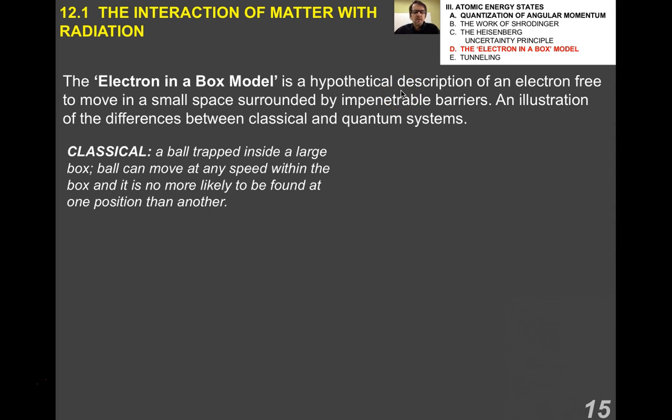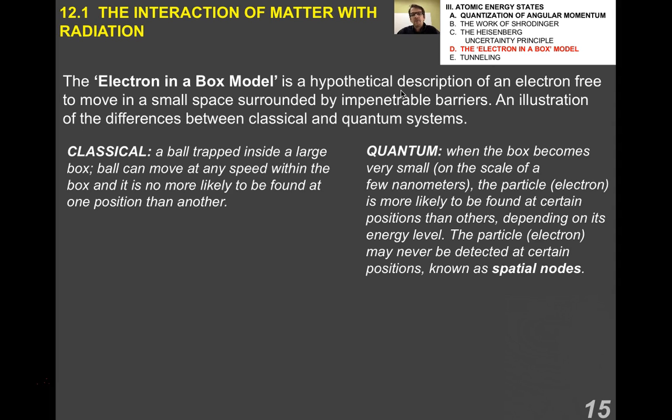The electron in a box model is a hypothetical description of an electron free to move in a small space surrounded by an impenetrable barrier. It's an illustration showing the difference between classical and quantum systems. In the classical case, if you think about a ball trapped inside a box that can move back and forth, the ball can move at any speed within the box, and it's no more likely to be found at one position than another. In the quantum case, when the box becomes very small, the particle, in this case an electron, is much more likely to be found at certain positions than others, and that depends on its energy level.